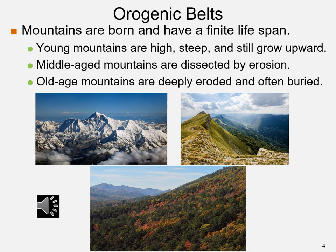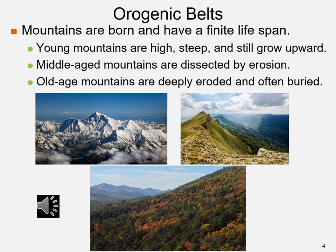The act of compression or stretching causes deformation. Orogenesis causes the rock to bend, break, shorten, stretch, or shear. This is a picture of a fault. The trace of the fault is the inferred vertical line, but we don't know if the hanging wall moved up or down, so given the evidence, we don't know what kind of fault occurred.